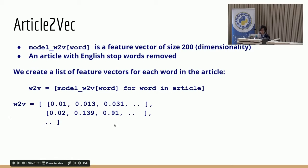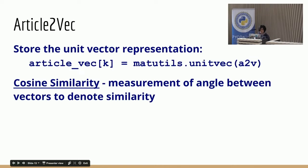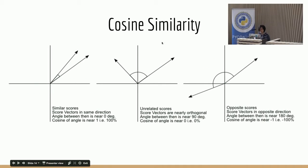We end up with a list of vectors — one for each word in the article. From this, we want to create a summary feature vector for the entire article. We take the mean of each of the features across all words in that article, using the NumPy mean function across axis zero. We then store the unit vector representation of that. Similar to the TF-IDF approach, we use cosine similarity to find out which articles are more or less similar. Cosine similarity is basically the measurement of the angle between vectors — similar scores have a very small angle, unrelated scores are orthogonal, and opposite scores are at maximum angle.